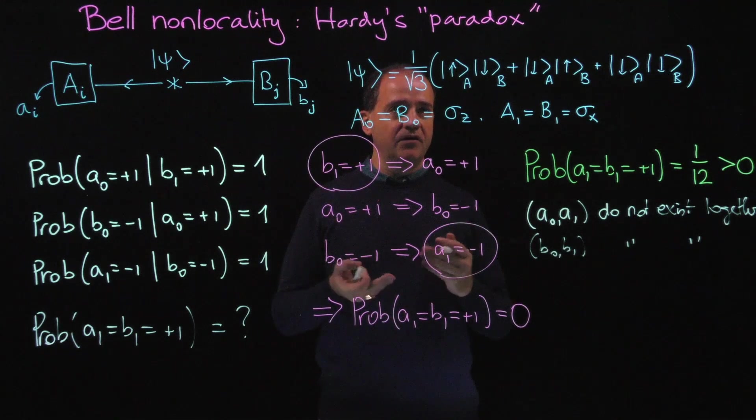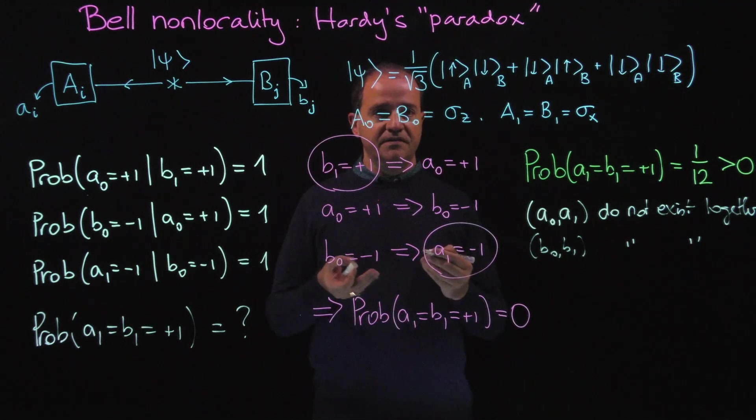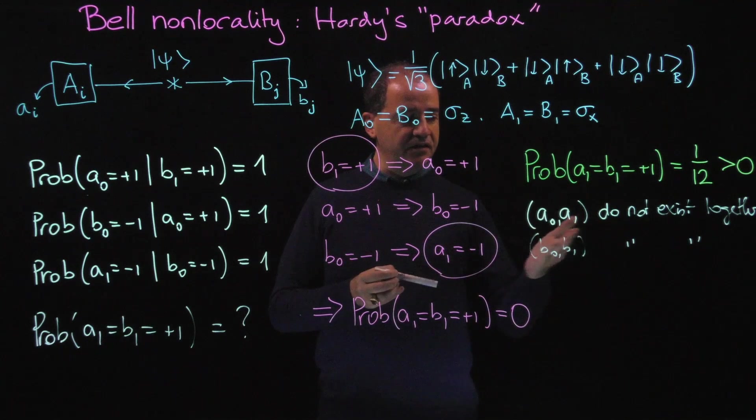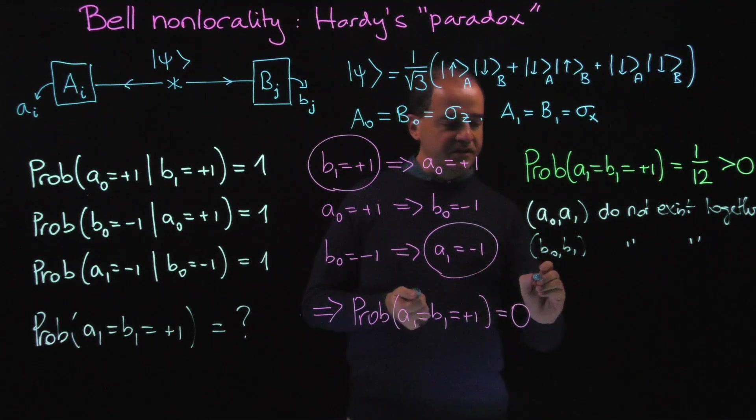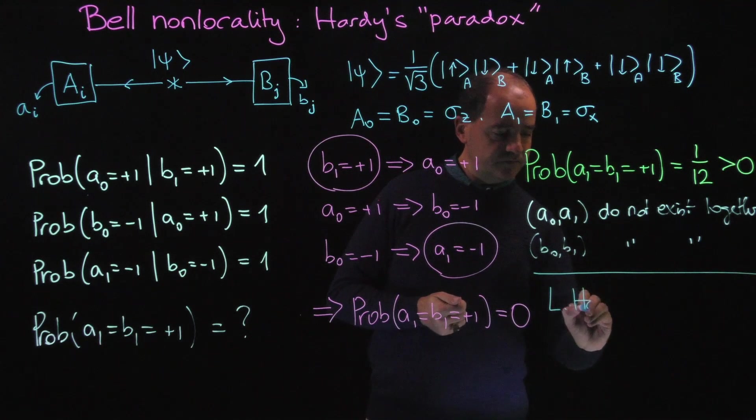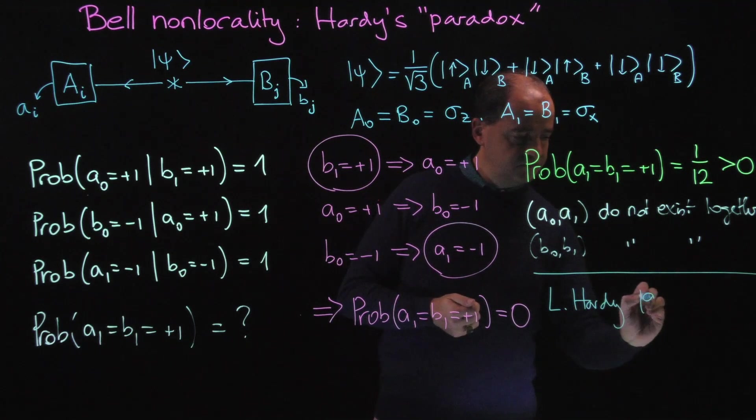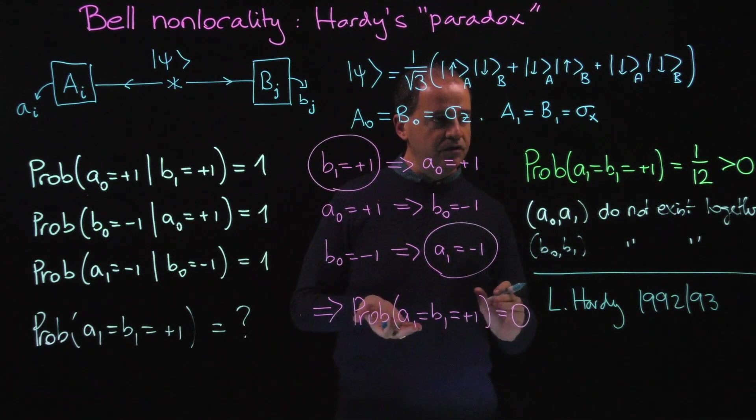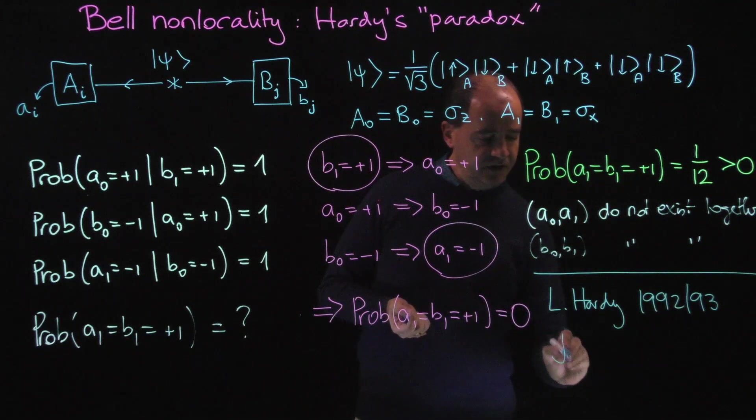This is how the contradiction is solved. Hardy's so-called paradox is not really a paradox. It's a feature of quantum theory coming from the fact that the results of the measurements are not pre-established. This argument was found by Lucien Hardy in the 1990s, and of course, this is an elaboration on what John Bell discovered in 1964.